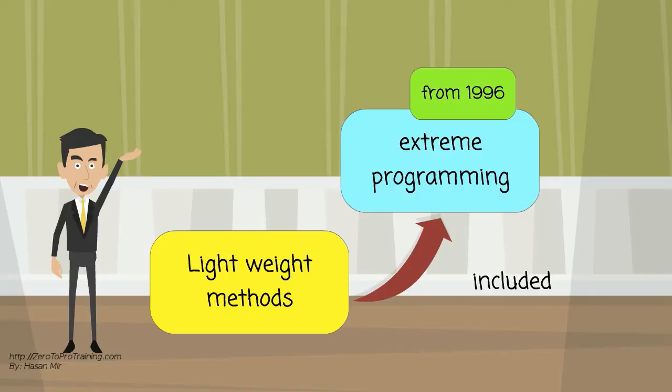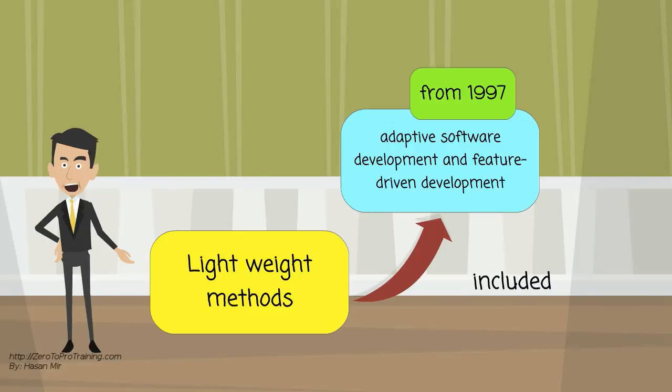From 1996, Crystal Clear and Extreme Programming, called XP. And from 1997, Adaptive Software Development and Feature Driven Development.